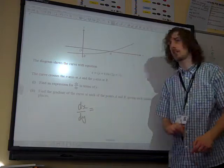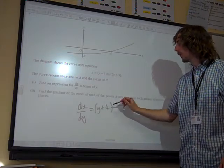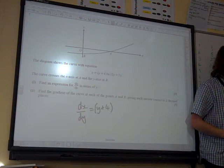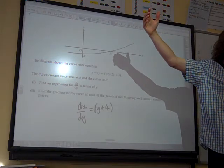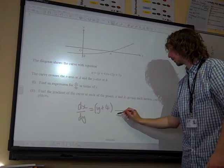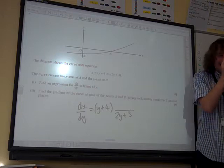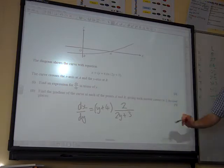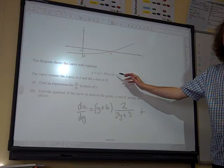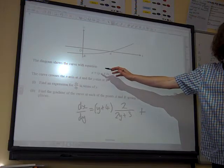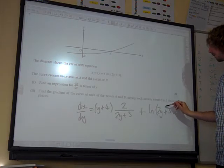It's y plus 4 times the natural log of 2y plus 3. The product rule says it's the first times the derivative of the second. So it's y plus 4. If we differentiate the natural log of 2y plus 3, that's a function of the function thing as well. Natural log of something gives us 1 over something times by the derivative of the inside bit, which would be 2, plus the second times the derivative of the first. Differentiate y plus 4, we just get 1, so this is just the natural log of 2y plus 3.